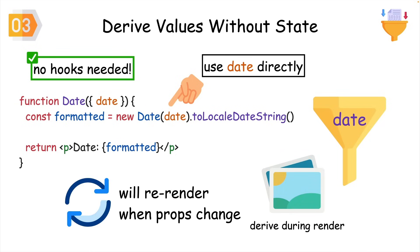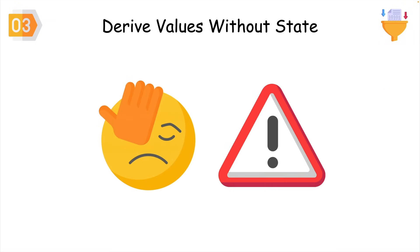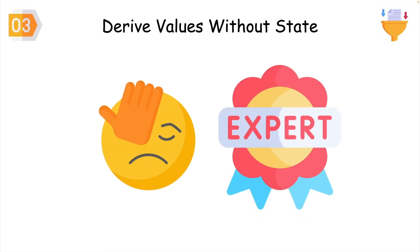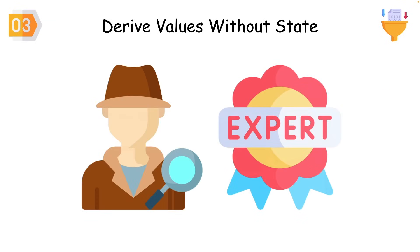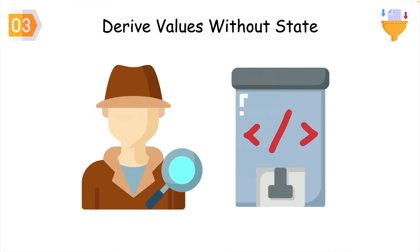That component is going to re-render anyway when props change. This is one of the most common mistakes React devs make, even if you're not a beginner. Recognizing this new type of data will let you remove a lot of unnecessary code.